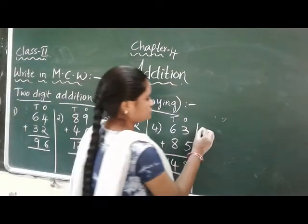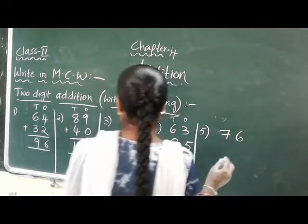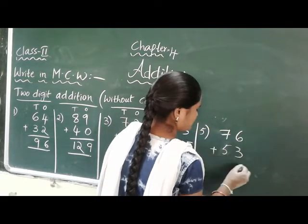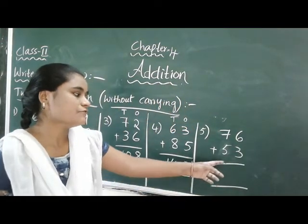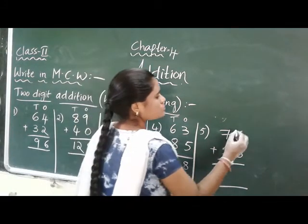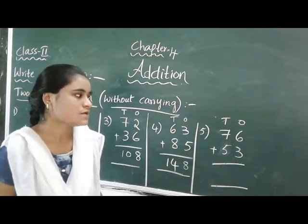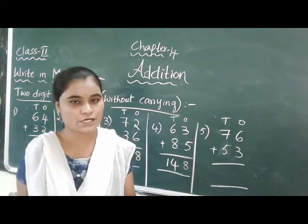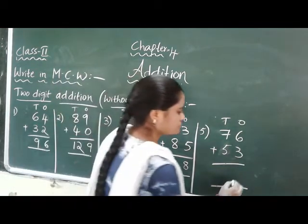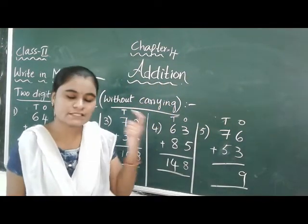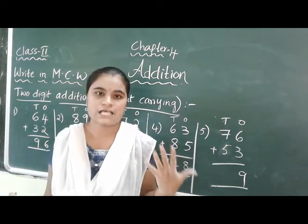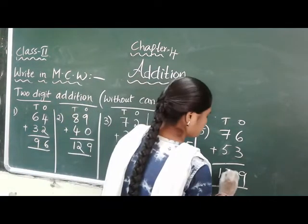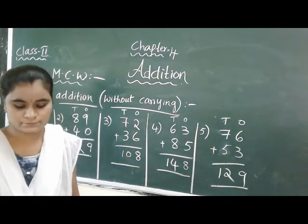Next: 66 plus 53. Ones place: 6 in the mind, take 3 fingers, 6 after 7, 8, 9. Tens place: 7 in the mind, take 5 fingers, 7 after 8, 9, 10, 11, 12. Answer is 129.